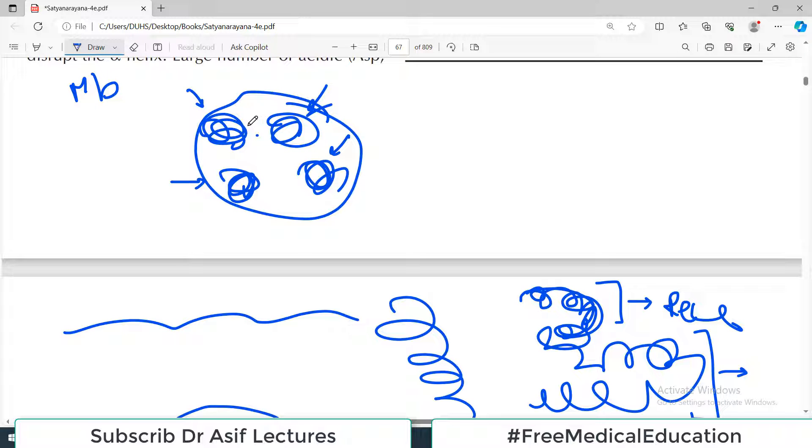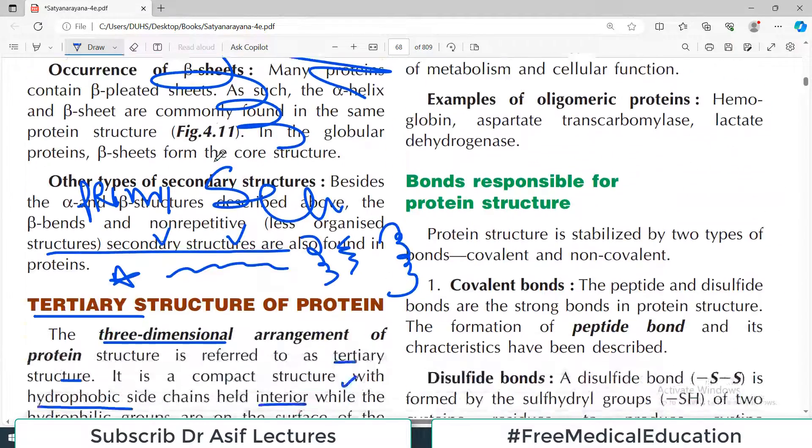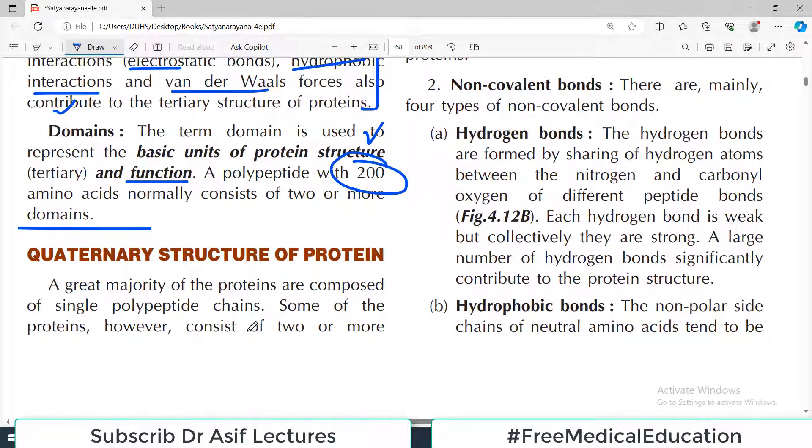If this is happening, where multiple monomers - one peptide chain is called a monomer, that's the word we use. If multiple monomers are combining, another name for a single protein is subunit. So you can call it by different names - there are four subunits, there are four monomers, and this structure is then known as quaternary structure. So that is the definition of quaternary structure.